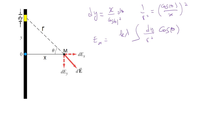So Ex equals k lambda over x times the integral of cosine theta d-theta, with x outside the integral because the distance x is fixed. Now, what are the limits for theta? My wire goes from plus infinity to minus infinity. If we go to minus infinity, theta goes to minus pi over 2. If we go to plus infinity, theta goes to plus pi over 2. So the integral will be from minus pi over 2 to pi over 2.